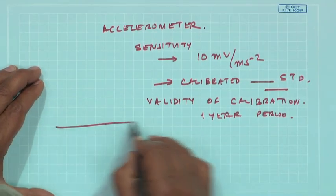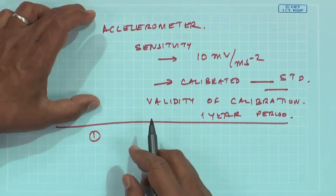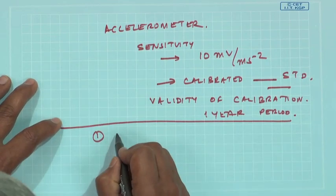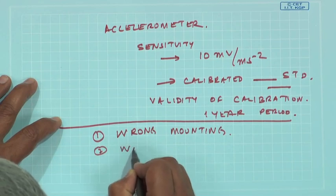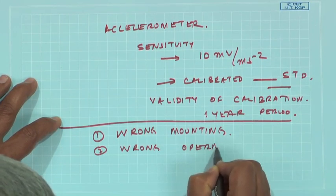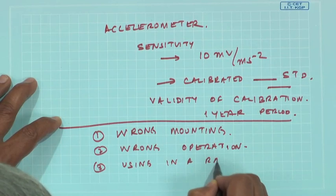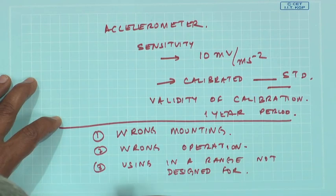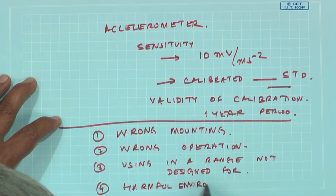Another possible reason why errors can happen: these are when I talked about random error and bias error, these are errors inherent because of the transducer itself. But as a CBM engineer we can have errors introduced because of wrong mounting, wrong operation, using in a range not designed for, harmful or environmental conditions.